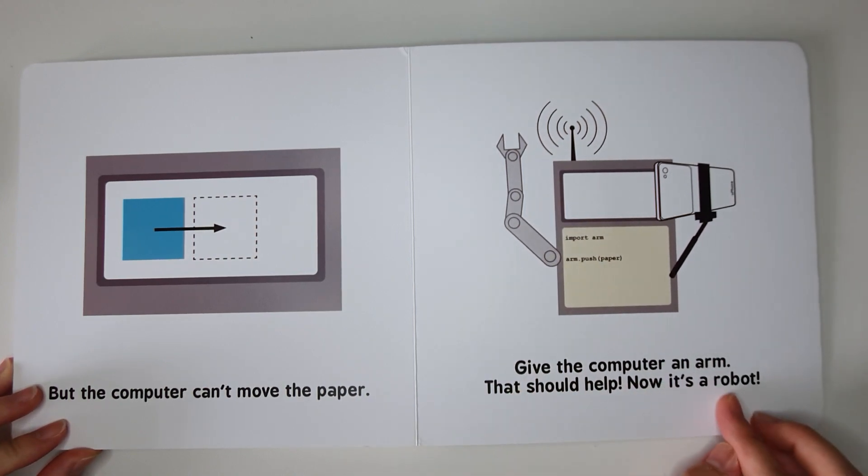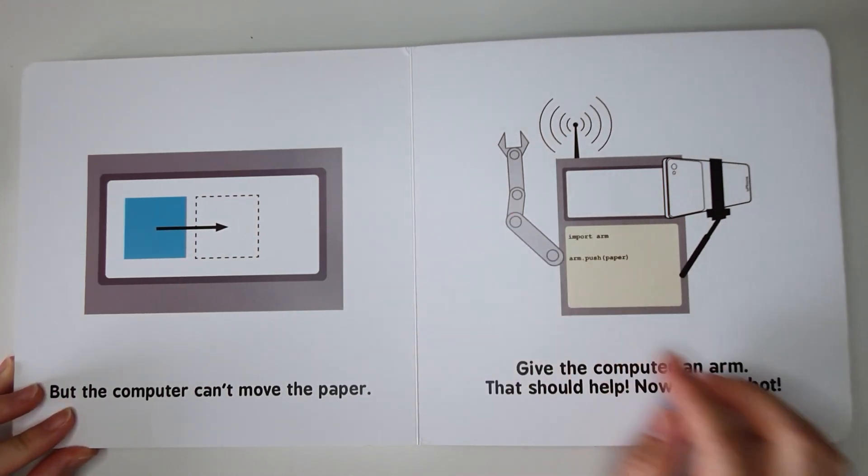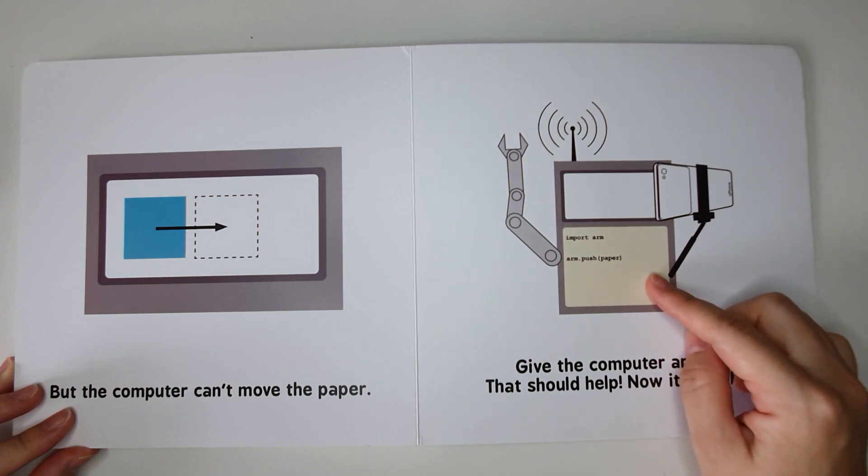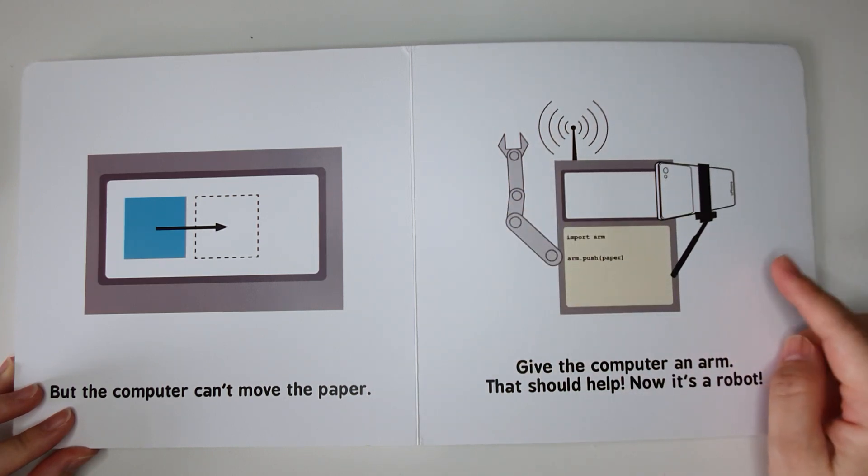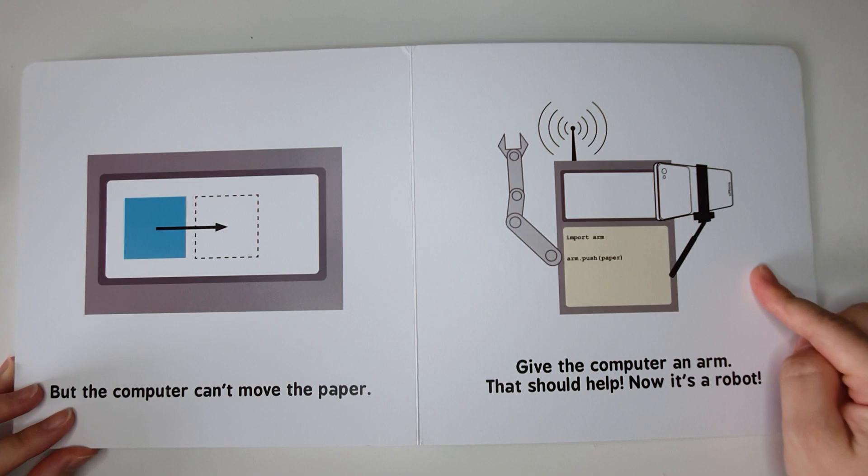We give the computer an arm. This is the arm. That should help. Now, it's a robot. This system now is called a robot.